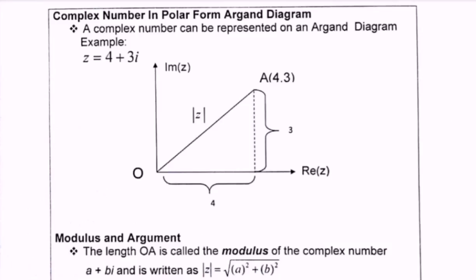For example, let's say the complex number z is equal to 4 plus 3i. We can denote it as a diagram. On the y-axis, it's the imaginary part. For the x-axis, it is the real part.